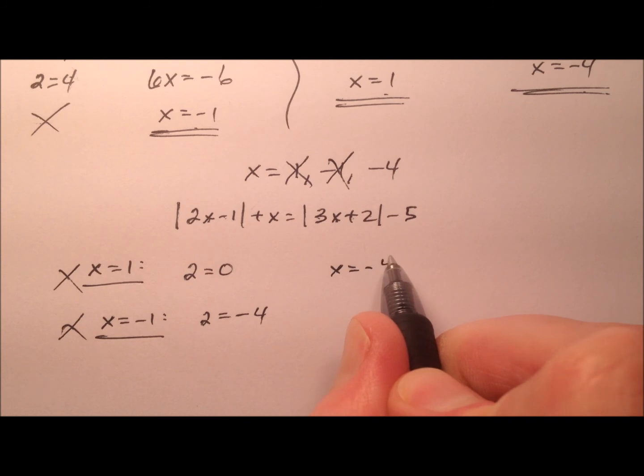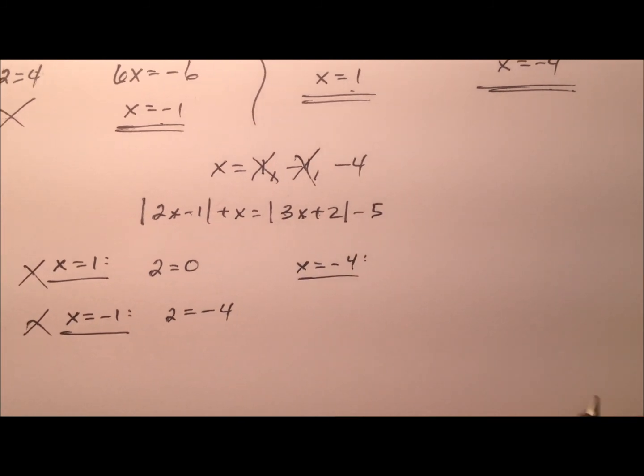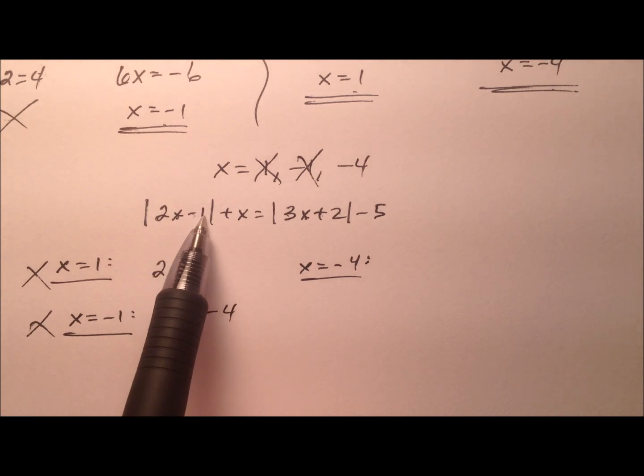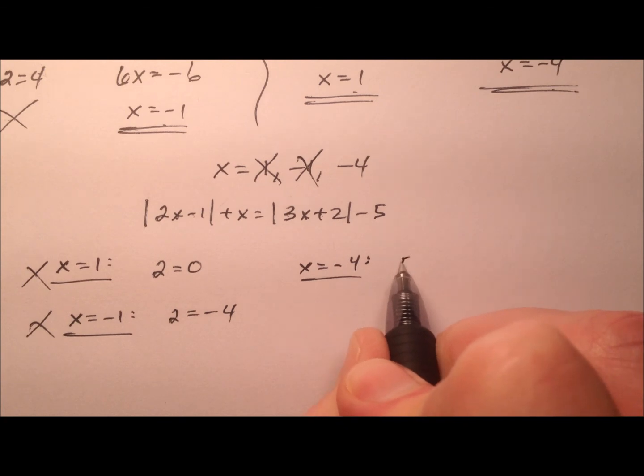So hopefully, right, my x equals negative 4 will work. Let's go ahead and plug it in and try. 2 times negative 4 is negative 8. Minus 1 is negative 9. Absolute value is 9. Minus 4 is 5.